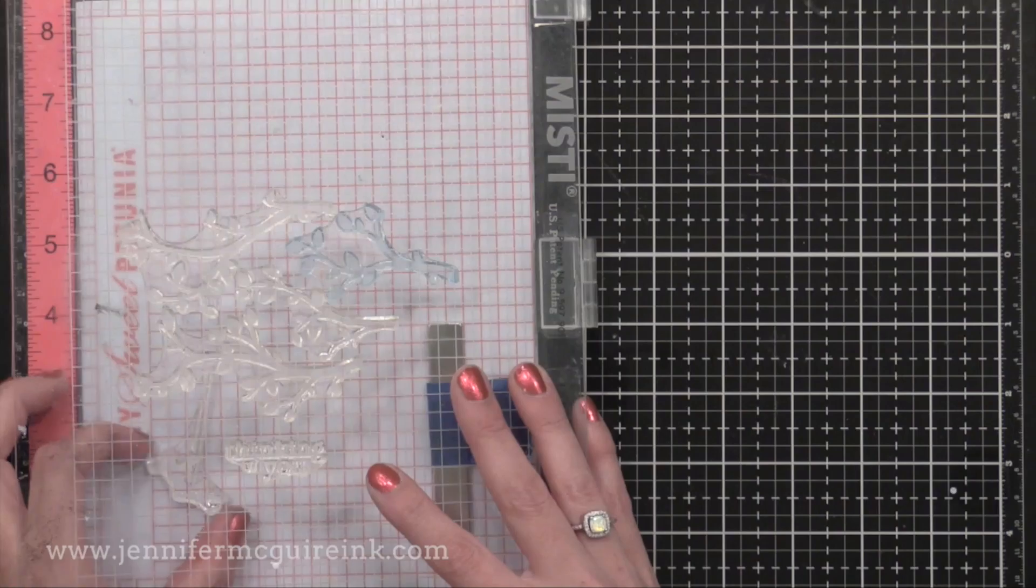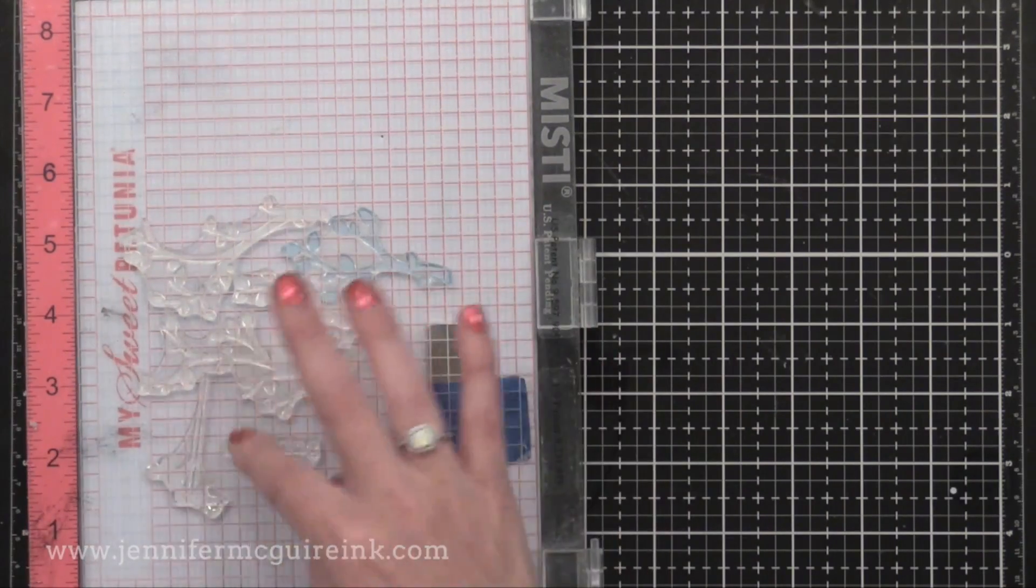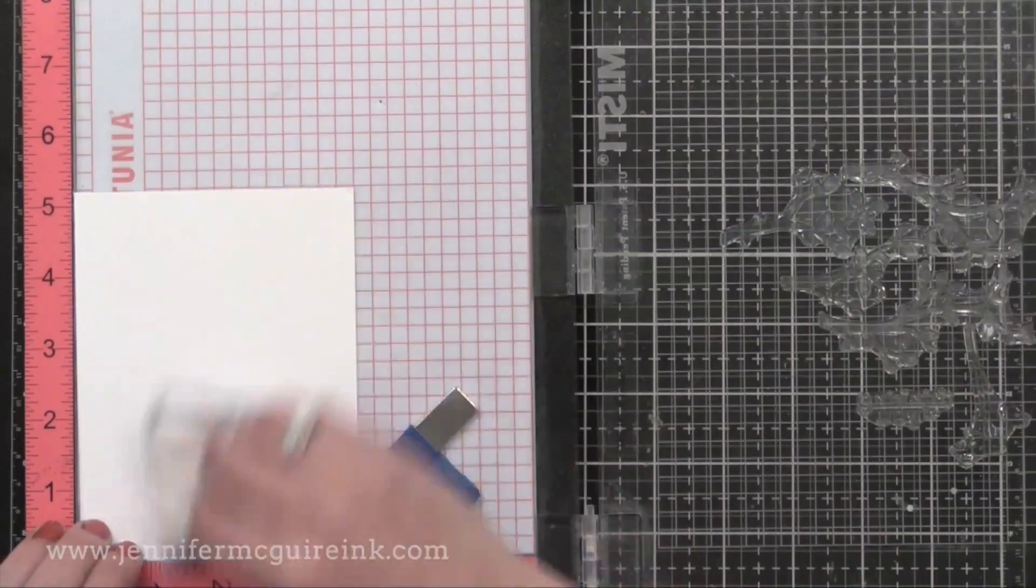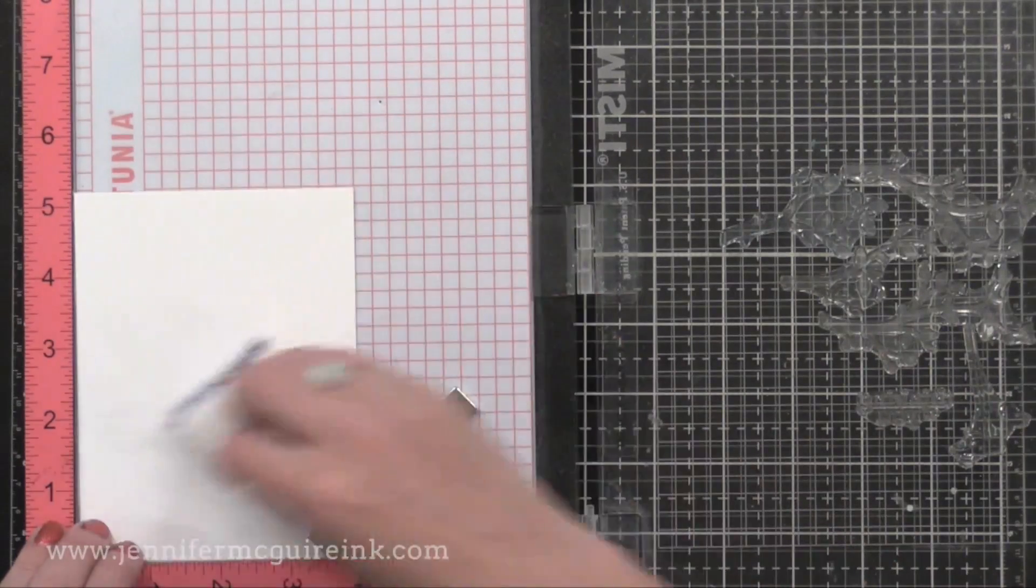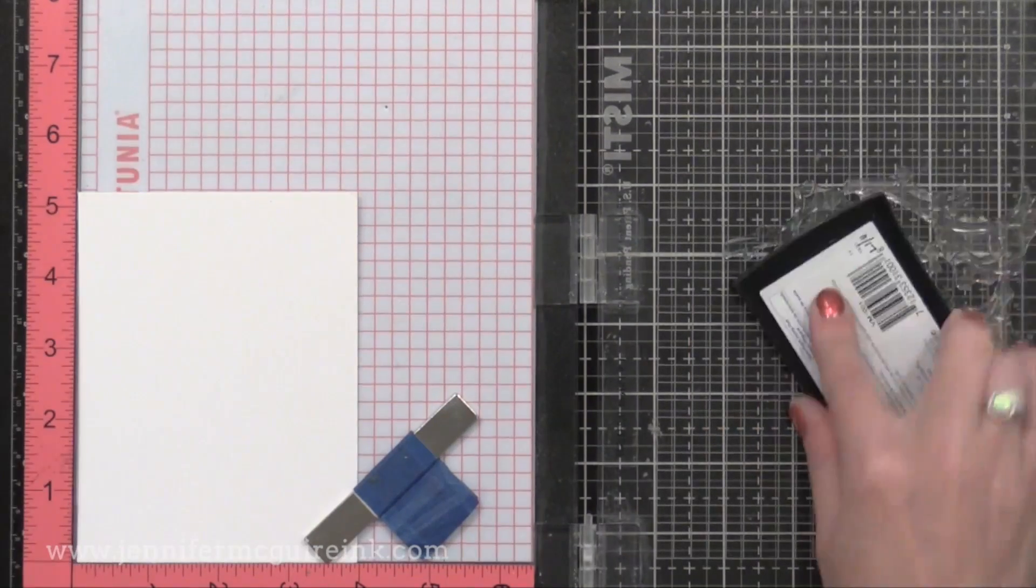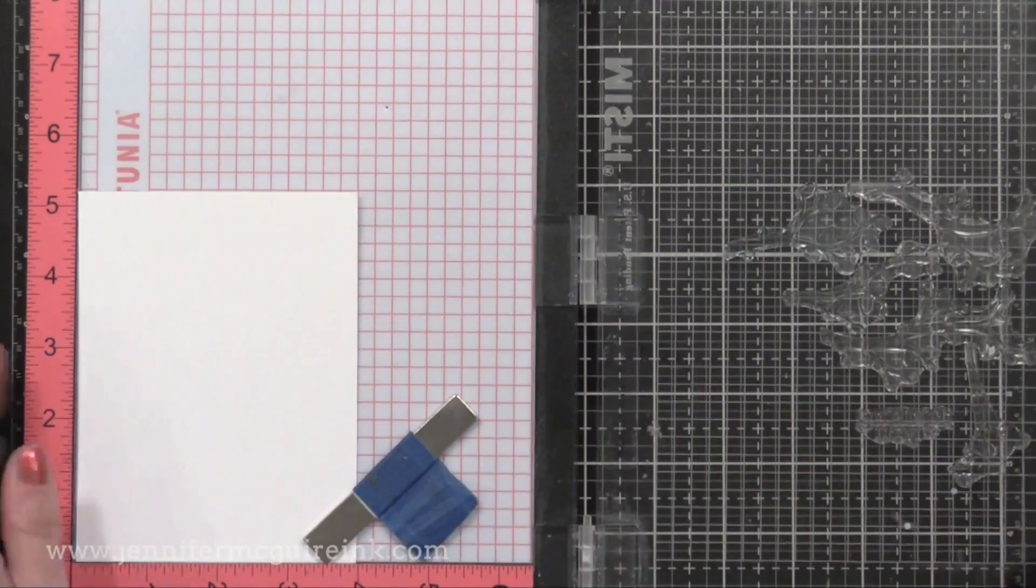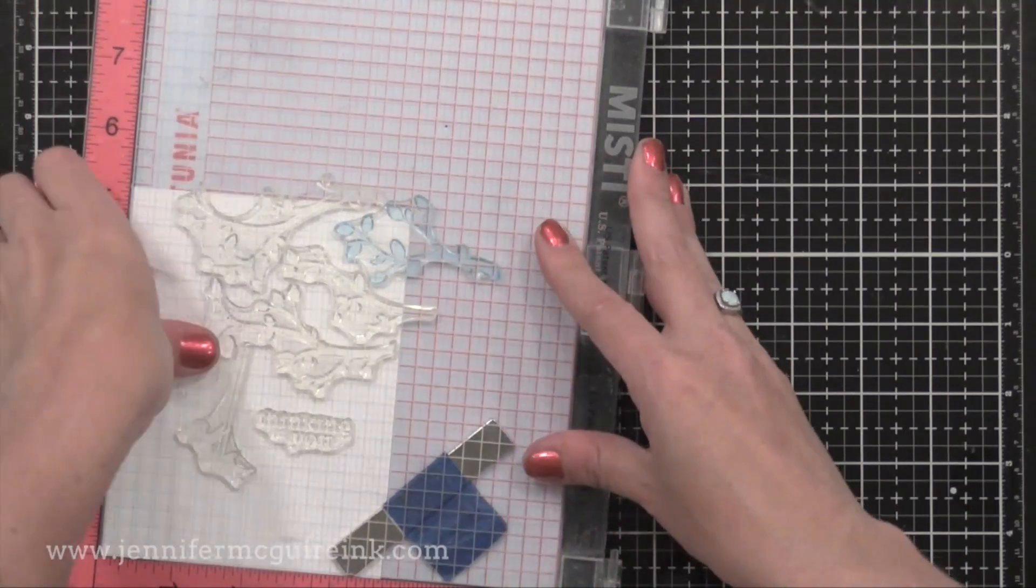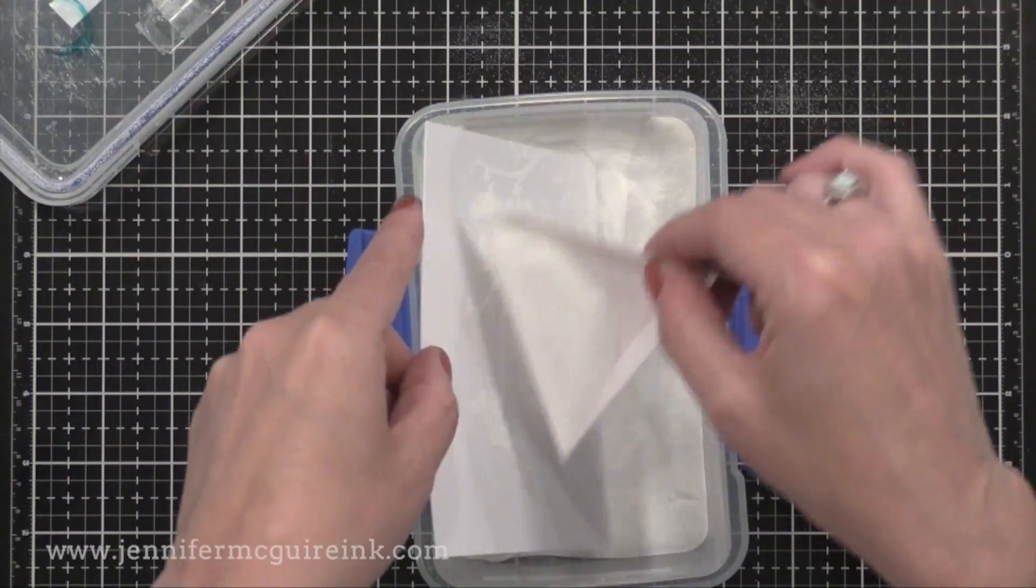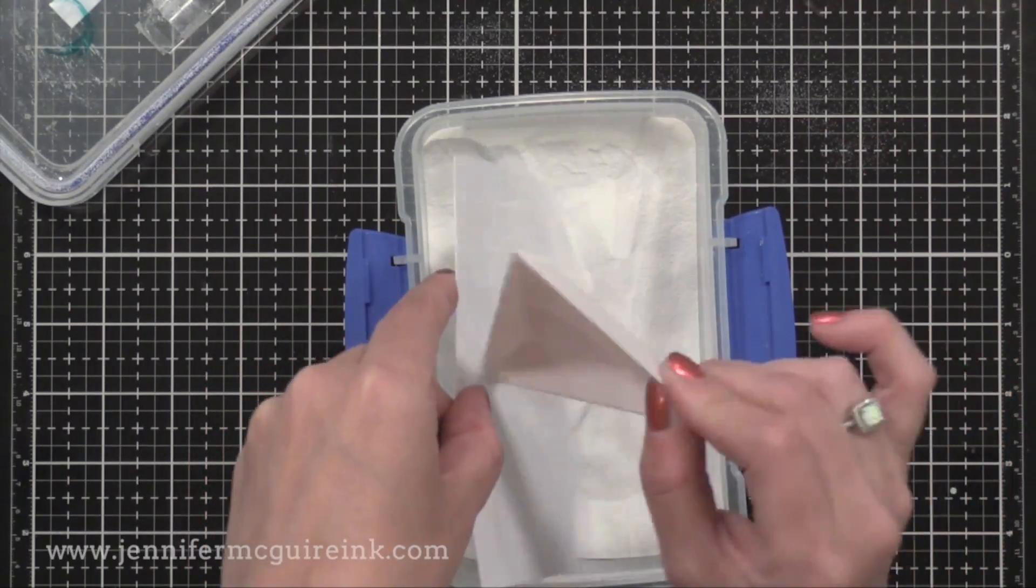So I've arranged some stamps on my MISTI. Remember, you could stamp these each individually with an acrylic block if you don't have a stamping tool. I'm stamping all of the images onto white card stock with my Versamark ink. Then I'm going to again add white embossing powder. You could even use like a pearl embossing powder here, and that would be beautiful too.